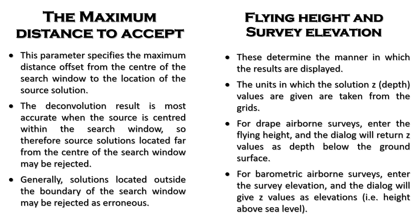The maximum distance to accept specifies the maximum distance offset from the center of the search window. The deconvolution result is most accurate when the source is centered within the search window, so solutions located far from the center may be rejected. Solutions located outside the boundary of the search window may be rejected as erroneous. The flight height or survey elevation determines the manner in which results are displayed and the units in which depth values are given.